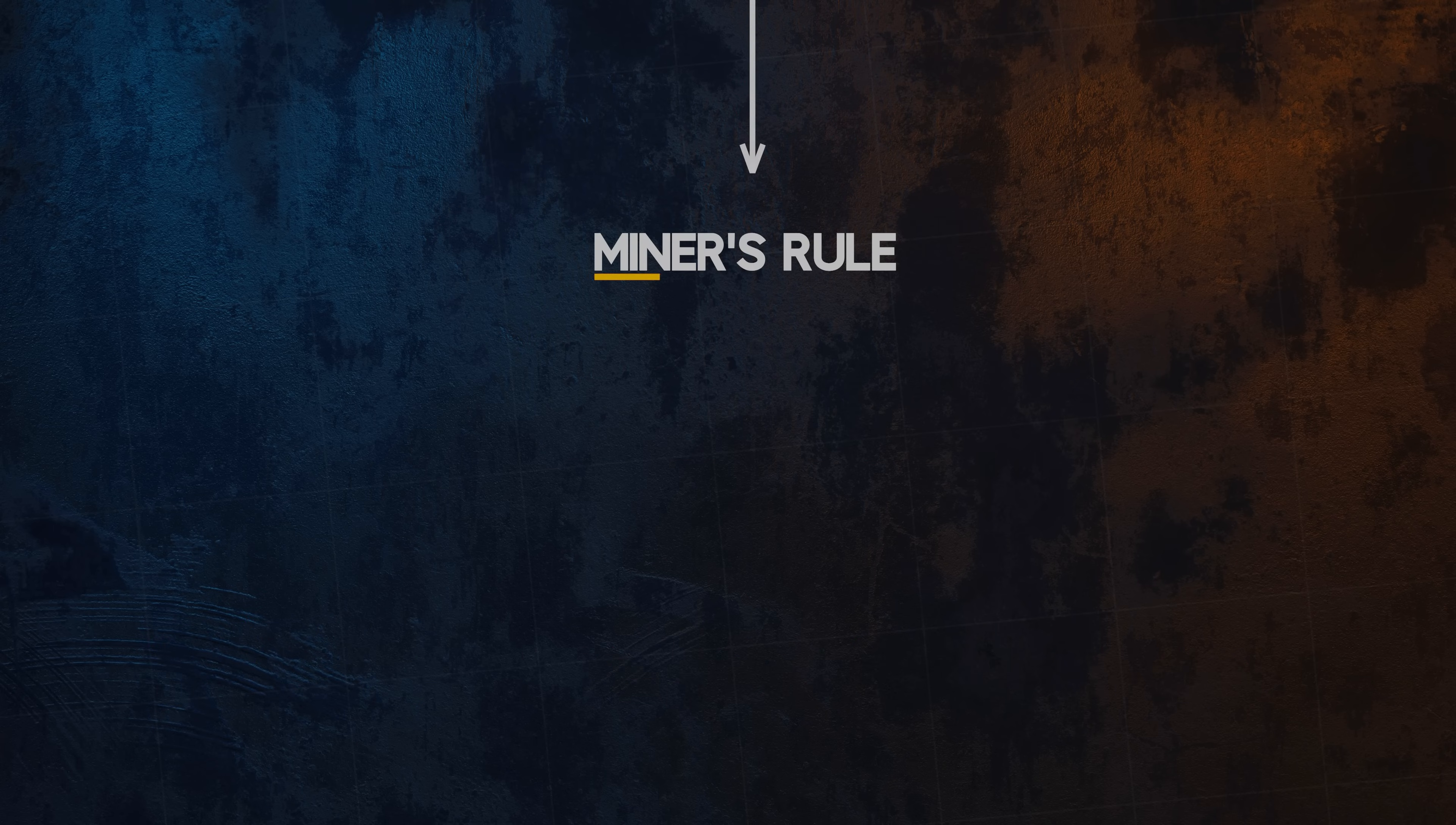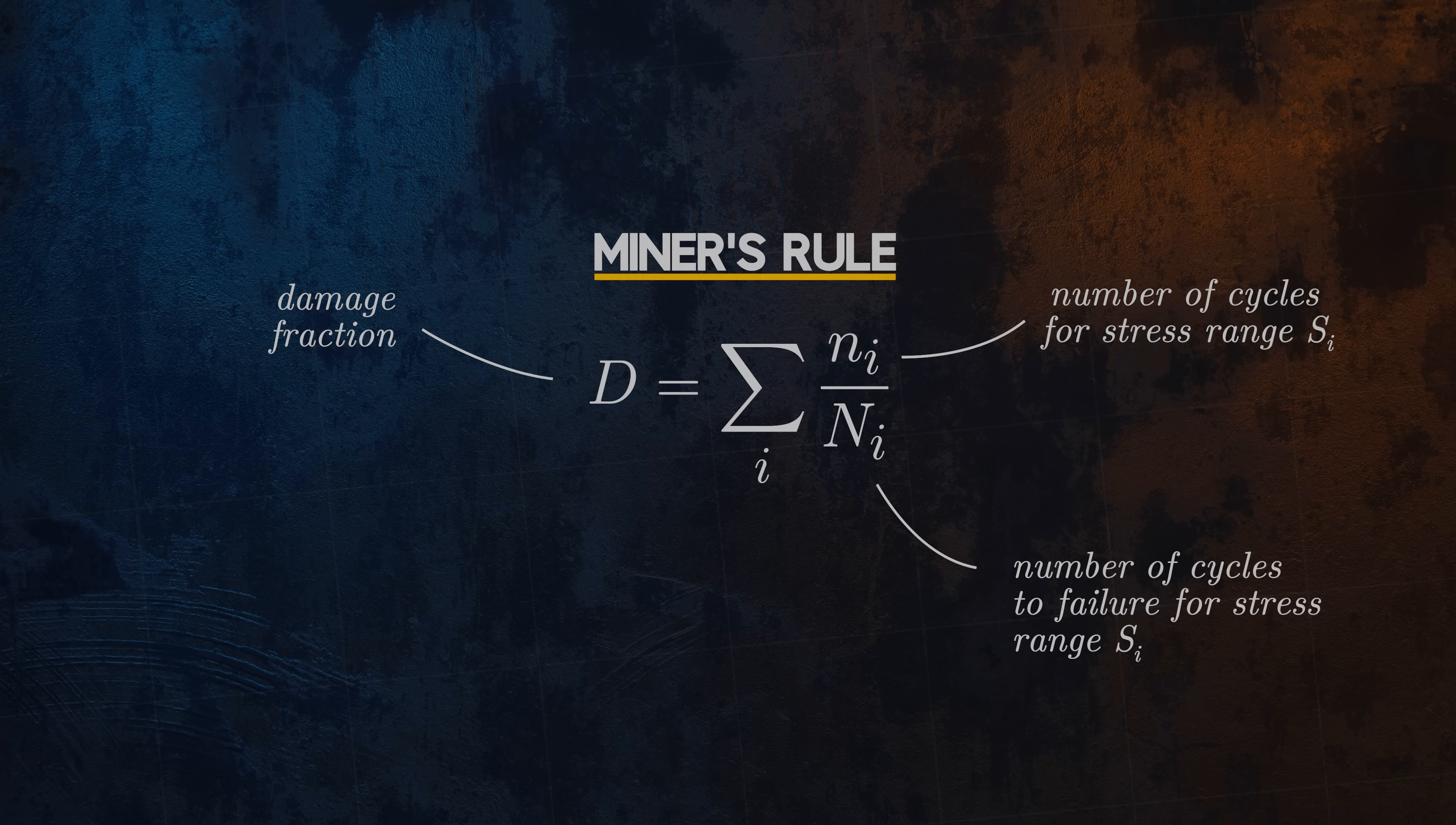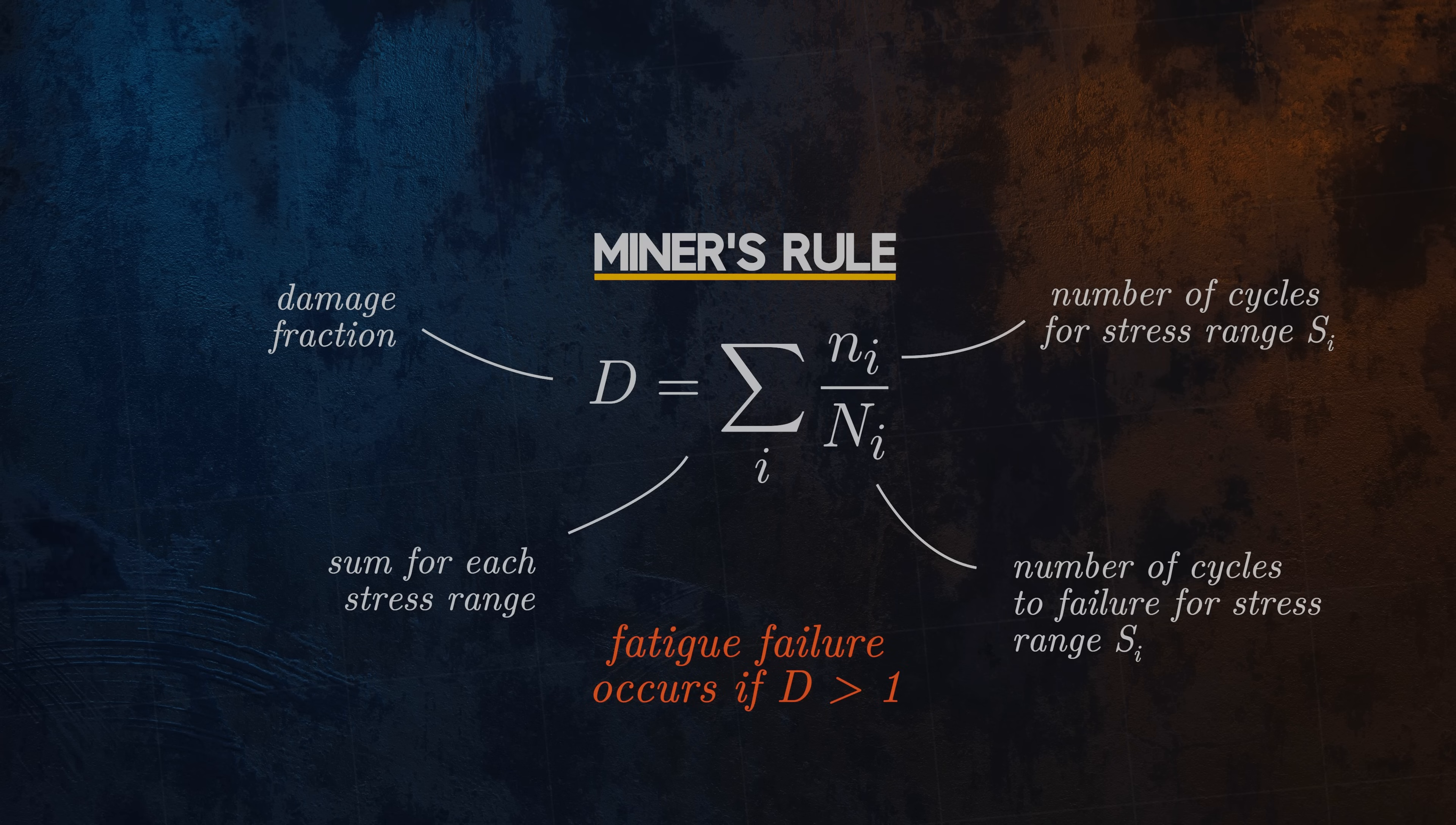Miner's rule allows us to account for the cumulative damage caused by each of these different constant amplitude stress ranges. It calculates the damage fraction D as the sum of the fatigue damage contributions for each stress range. The individual contributions are calculated by dividing the number of cycles by the number of cycles to failure for that stress range. The damage contributions from all stress ranges are then summed. If the total sum damage fraction is greater than 1, fatigue failure is considered to have occurred.